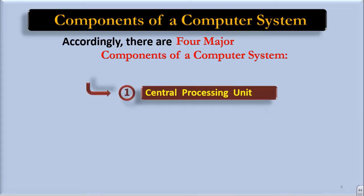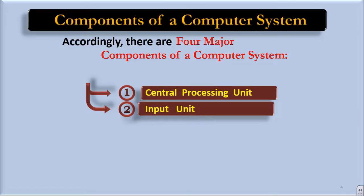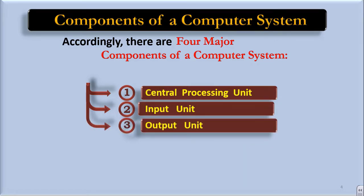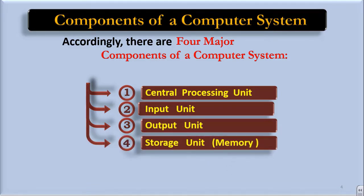The first one is Central Processing Unit. Second one, Input Unit. The third one, Output Unit. The fourth one, Storage Unit, i.e. Memory.